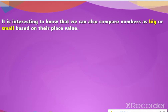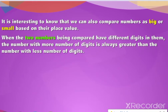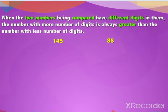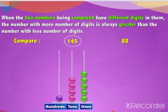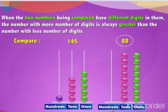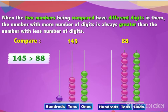It is interesting to know that we can also compare numbers as big or small based on their place value. When the two numbers being compared have different numbers of digits, the number with more digits is always greater. For example, one hundred and forty-five is a three-digit number, while eighty-eight is a two-digit number. Hence, one hundred and forty-five is greater than eighty-eight.